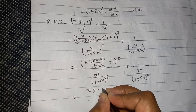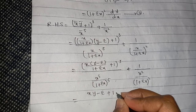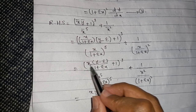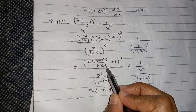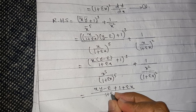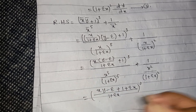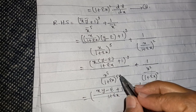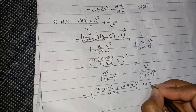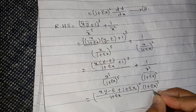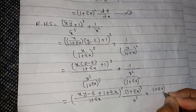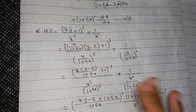Taking the LCM, x*(y minus epsilon) plus (1 plus epsilon*x) — multiplying x inside — gives this term divided by (1 plus epsilon*x)^3. The remaining terms give (1 plus epsilon*x)^5 divided by x^5, and similarly (1 plus epsilon*x)^2 divided by x^2.